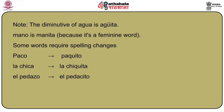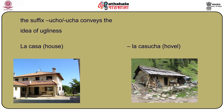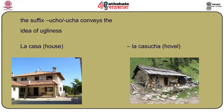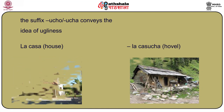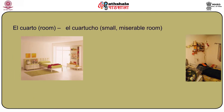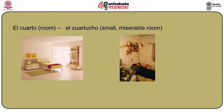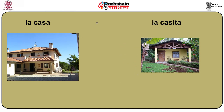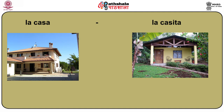El pedazo becomes pedacito — the -azo changes to -acito. The suffix -ucho or -ucha conveys the idea of ugliness, whereas -ito/-ita is positive. La casa (house) → la casucha (hovel); el cuarto (room) → el cuartucho (small miserable room). By putting the suffix -ucho or -ucha you make something negative. So casa → casita is a cute little house, casucha is a hovel; cuarto → cuartito is a small cozy room, cuartucho is a small miserable room.